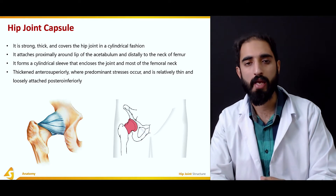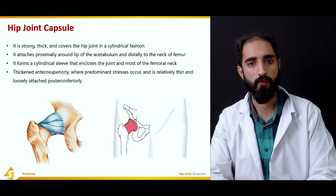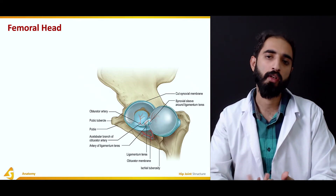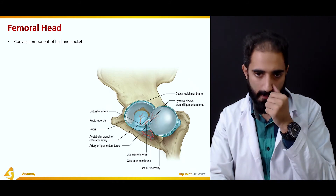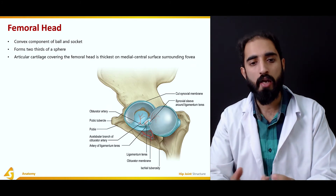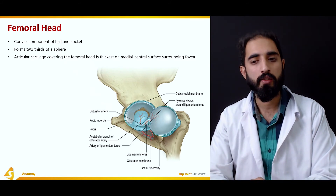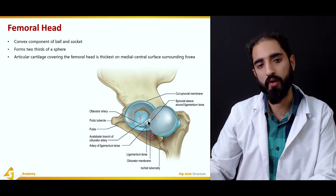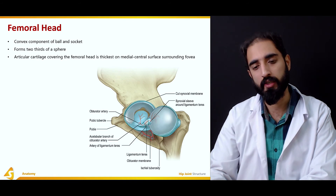The capsule is also reinforced by the ligaments of the hip, including the iliofemoral, ischiofemoral, and pubofemoral ligaments. The second bony partner of the hip joint is the femoral head, which is the convex bony partner. It forms two-thirds of a sphere, and articular cartilage — specifically hyaline cartilage — covers the femoral head and is thickest on the medial central surface surrounding the fovea. The fovea is a depression in the center of the femoral head where the ligament of the head of the femur, also called the ligamentum teres, attaches.